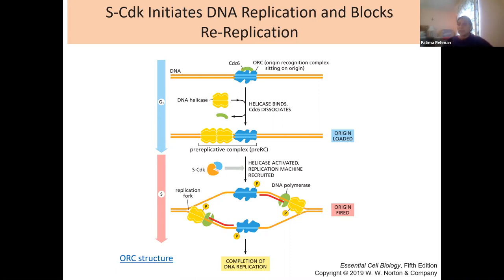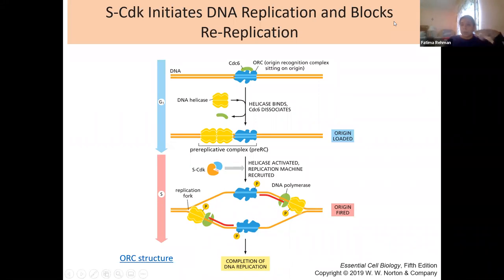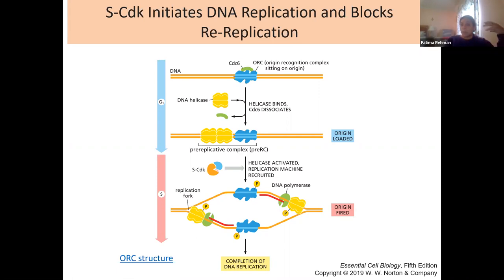In metaphase, chromosomes line up at the central equator of the cell. Astral microtubules maintain the structure of the spindle fibers, and the longer kinetochore microtubules are bound to each chromosome. A checkpoint occurs here with the APC to ensure chromosomes are lined up properly and each sister chromatid will go to the opposite side of the spindle fiber. A fluorescent image and light micrograph show chromosomes lined up at the central point of the cell.